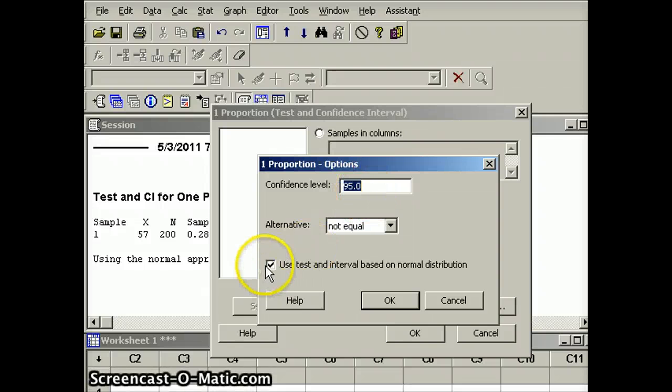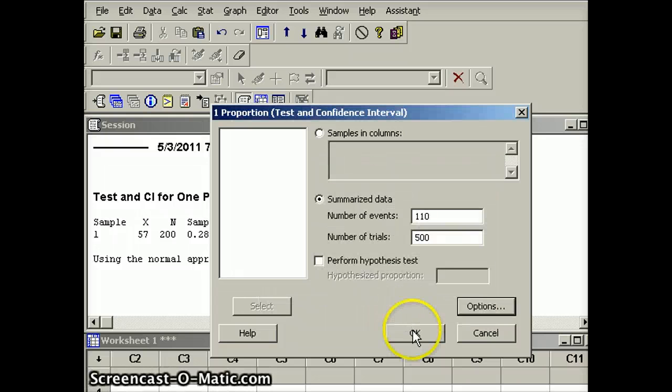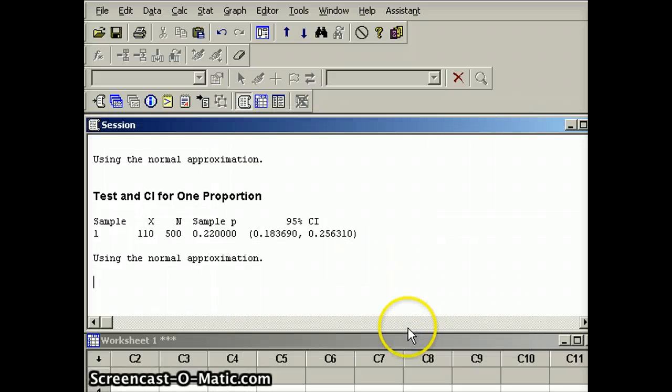But we want to make it 95, and this is the button that tells us to make sure we use the test and the interval based on the normal distribution. So we're going to say okay here, we're going to say okay there, and indeed there we have our 95 percent confidence interval for p.